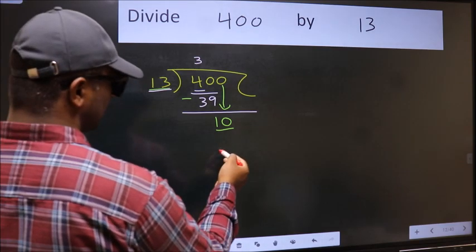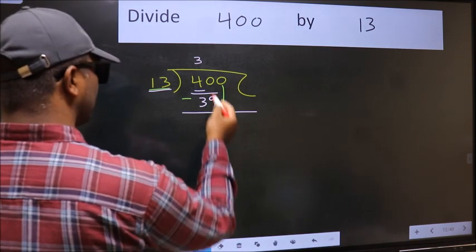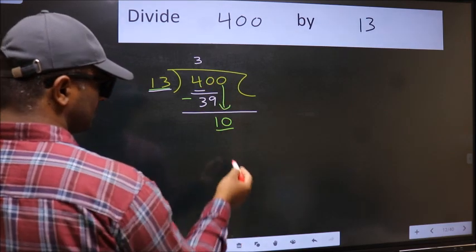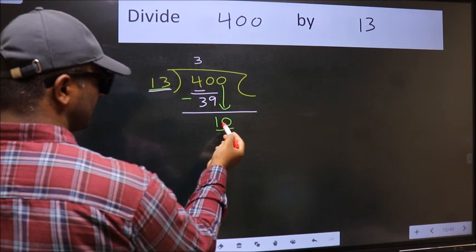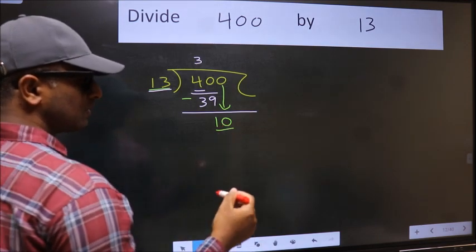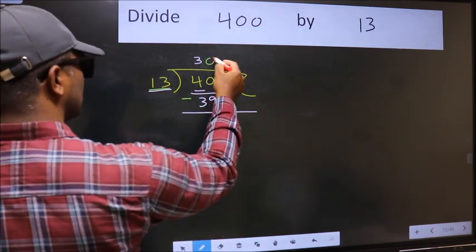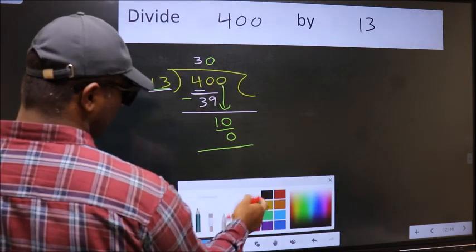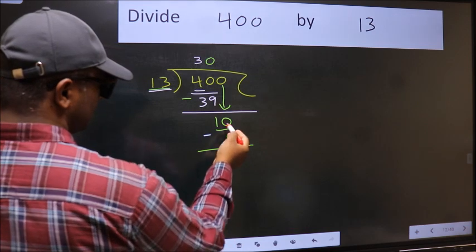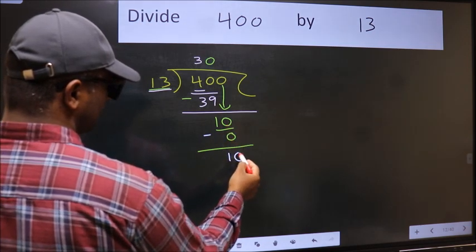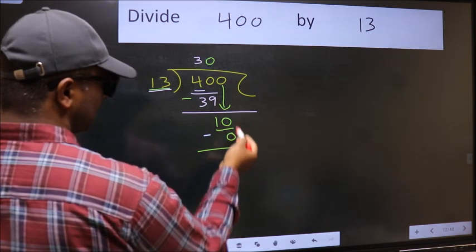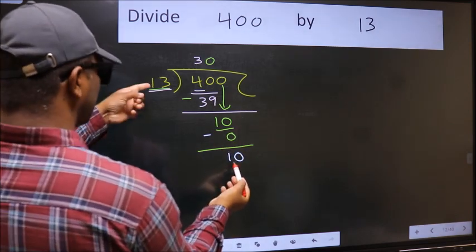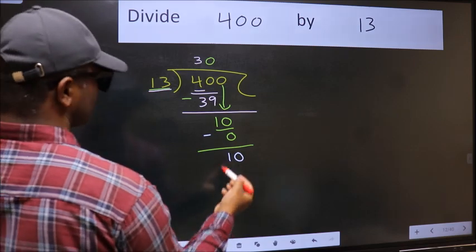Which number should we take here? If I take 1, we will get 13, but 13 is larger than 10. So what we should do is take 0: 13 into 0 is 0. Now we should subtract: 10 minus 0 is 10. Over here we did not bring any number down and 10 is smaller than 13, so now we can put dot and take 0.